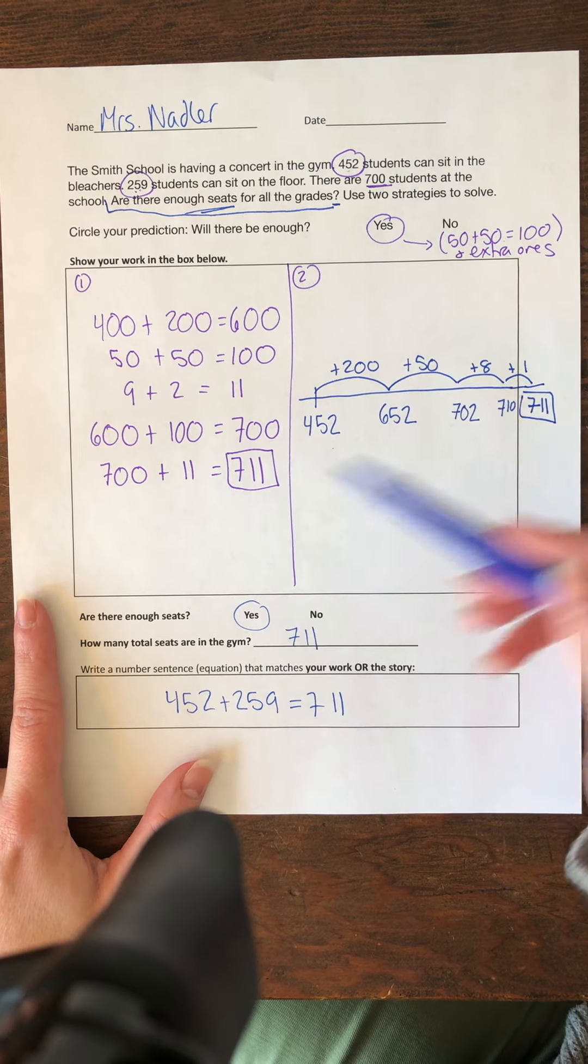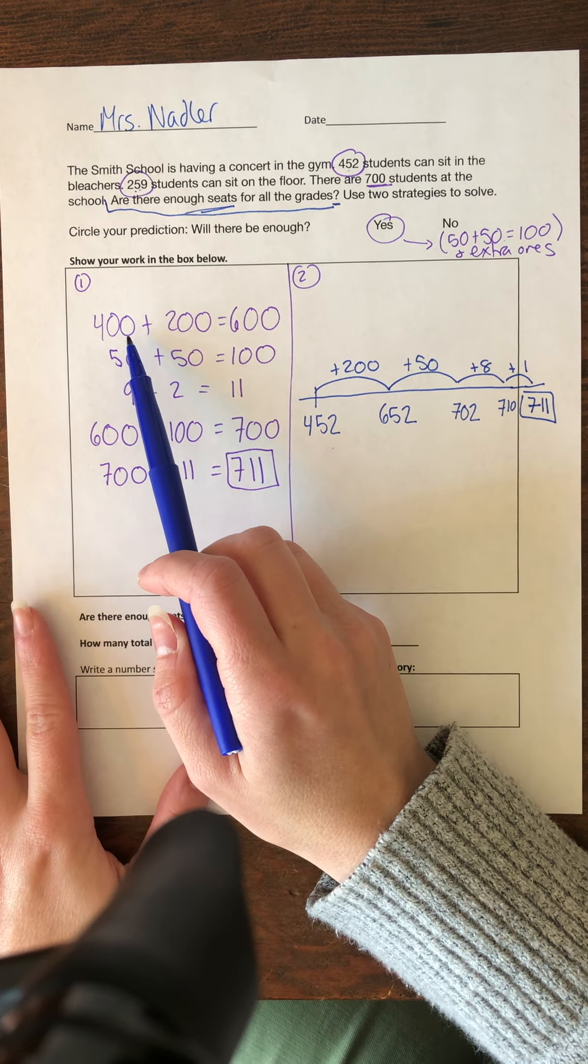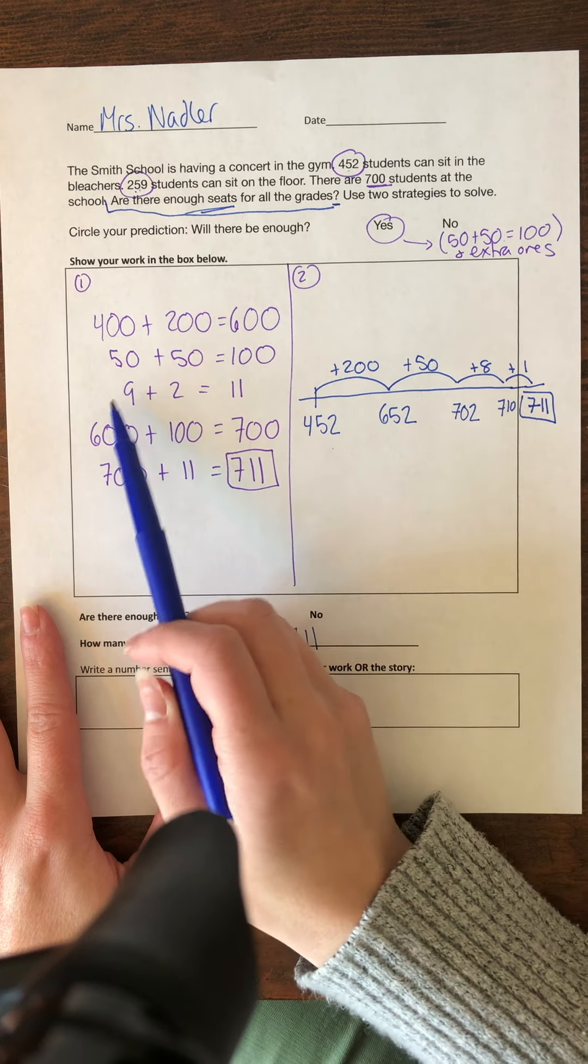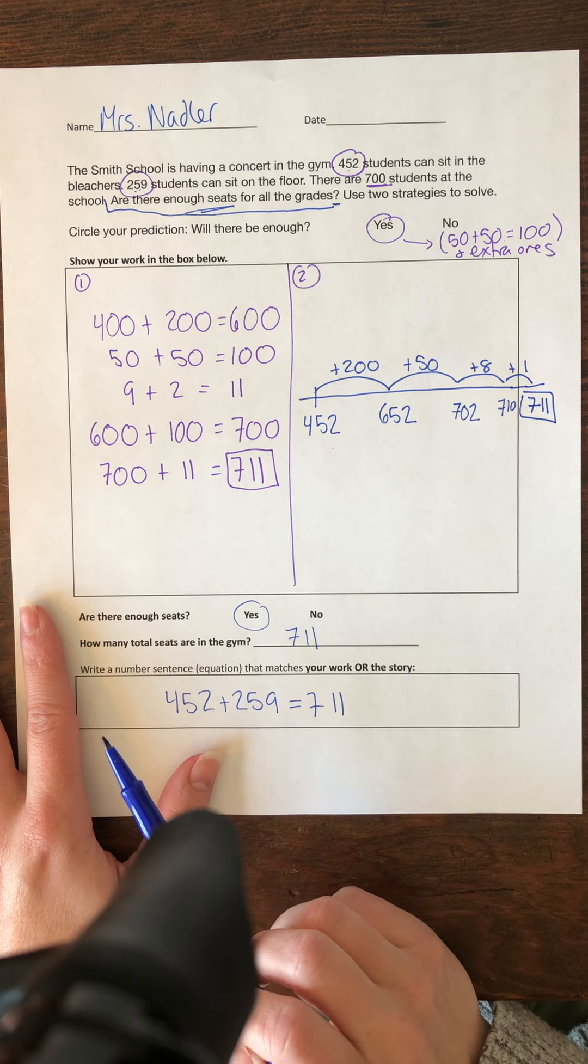And then here are two different ways. So I started here again with my bigger number and I decomposed by hundreds, tens and ones. I combined my hundreds, then I combined my tens and my ones, and then I added them all up together and I got 711.